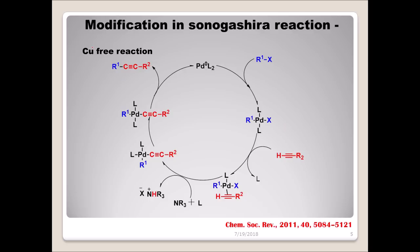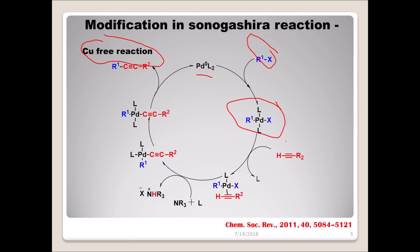Now coming to the copper-free reaction. Very recently there has been a modification — people are working toward making the Sonogashira reaction copper-free, which is a very big step in improving efficiency and utility. The basic mechanism remains similar: first, oxidative addition takes place where palladium gets inserted between the carbon and halogen bond. Then the alkyne gets exchanged with a ligand on palladium.